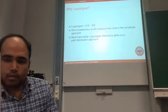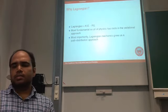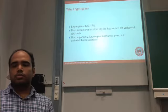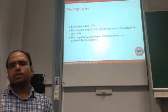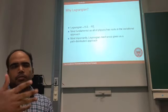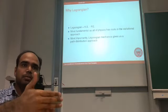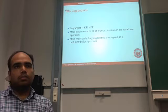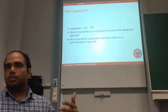We go to the Lagrangian as a foundational idea. The Lagrangian is kinetic minus potential energy. The motivation for using a Lagrangian or variational approach is that it is very fundamental — even more fundamental than the Hamiltonian concept — and all of physics and all equations can be derived from the action principle. Most importantly, the Lagrangian gives us a path distribution approach, allowing us to find how a system evolves from state A to state B, determine path distributions, and see which paths are most likely.